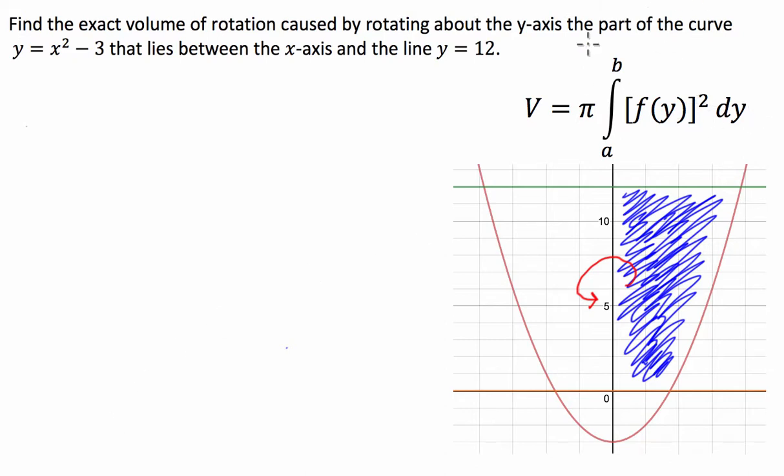Alright, so let's apply this. Now what we've got at the moment is a function in terms of x, so what we have to do is rearrange this so it's x in terms of y. So we're going to take the 3 to the other side, and we've got x squared equals y plus 3. Then we take the square root of each side so we're just left with x.